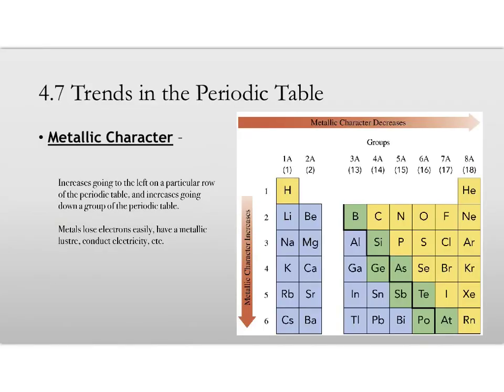Metallic character increases going to the left, across a row of the periodic table, and increases down a group in the periodic table. And therefore, the most metallic element on the periodic table would be francium element 87, which is actually below cesium right there. It's in row 7. That would be the most metallic. And you can see up here in the same group is hydrogen, which is not a metal. Because the metallic character has decreased so much going up this group that hydrogen is not even a metal.